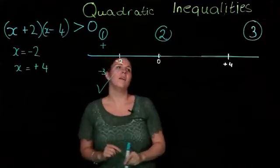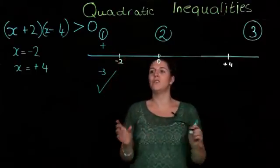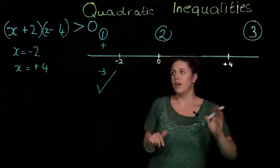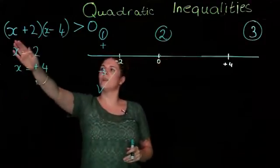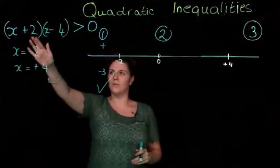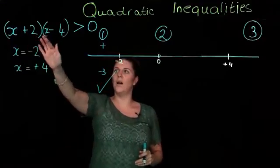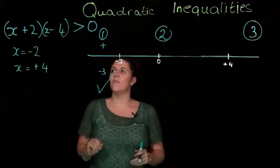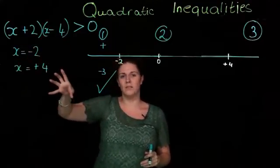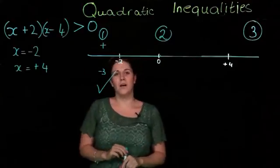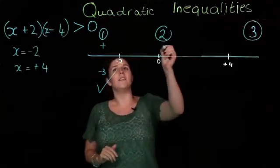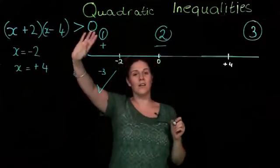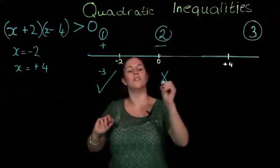We'll test the middle region, a number between minus 2 and 4. I'm going to take 1. So 1 plus 2 is 3, 1 minus 4 is minus 3. We've ended up with 3 times minus 3, which gives us minus 9. This region is negative, which is not greater than 0, so this does not work.